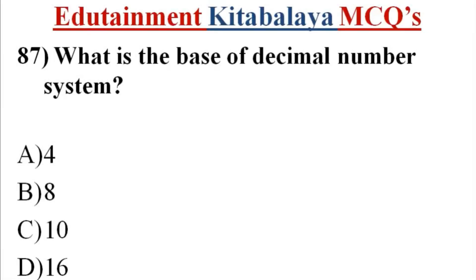Question number 87. What is the base of decimal number system? A. 4. B. 8. C. 10. D. 16. Correct answer is C. 10.